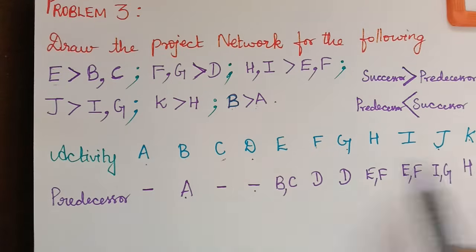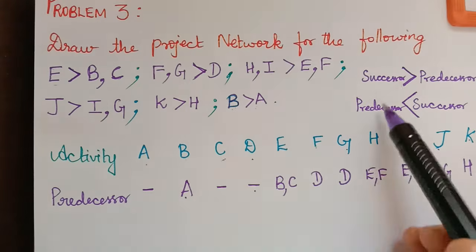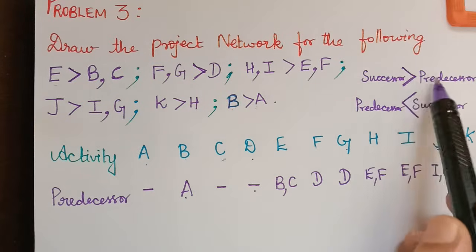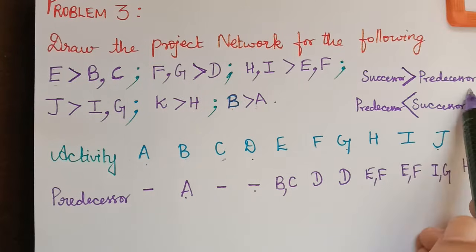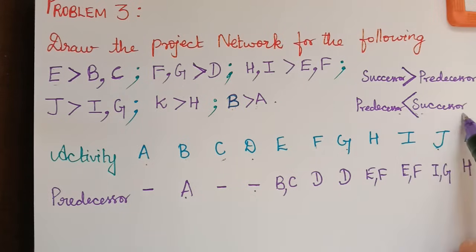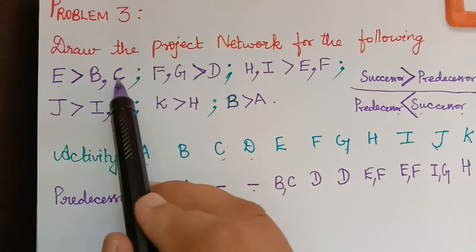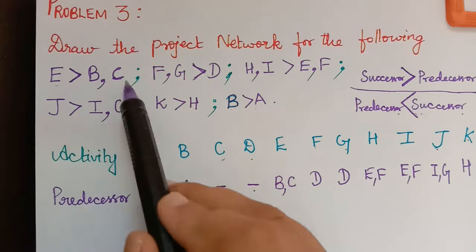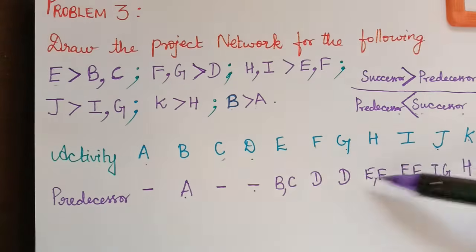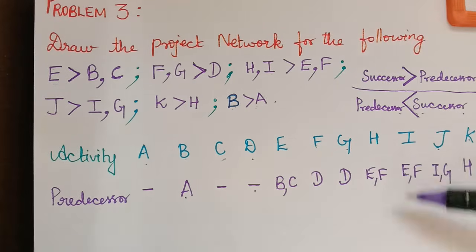We have now written all activities and their predecessors using the given data. Remember: the greater side of the symbol is the successor and the lesser side is the predecessor. Now using this data, let us draw the network diagram.